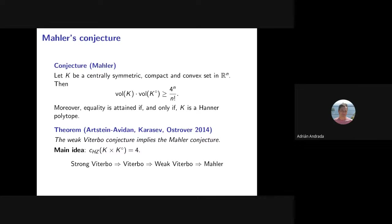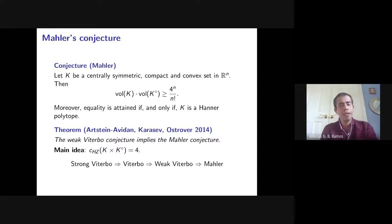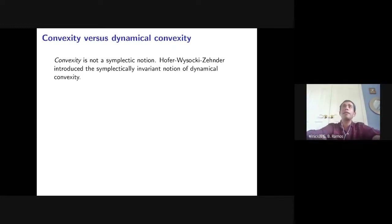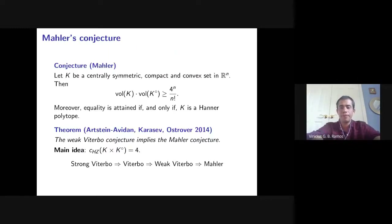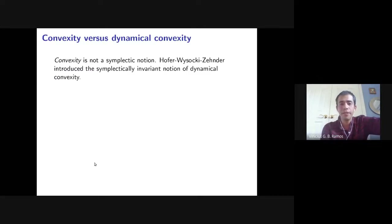When were these conjectures formulated? The Mahler conjecture is several decades old — possibly early 20th century. The Viterbo conjecture is from the 1990s. These conjectures are all about normalized capacities on convex sets; there are counterexamples for equality of capacities on non-convex sets.